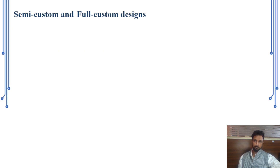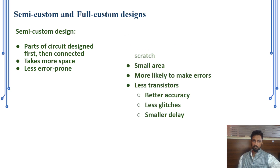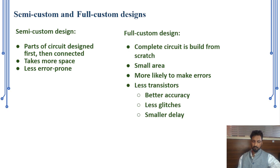In back-end design there are two types of design processes: semi-custom and full custom. In semi-custom design, small pre-designed modules are combined to build larger modules. In full custom design, you start from scratch — it consumes less area but is more prone to errors and requires greater care. However, from an optimization point of view, full custom design is always preferred.